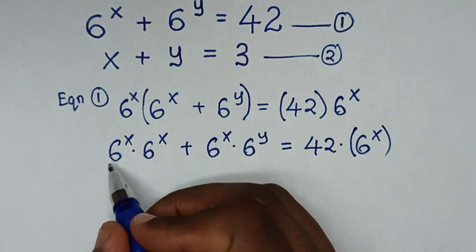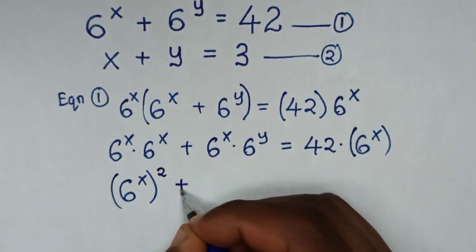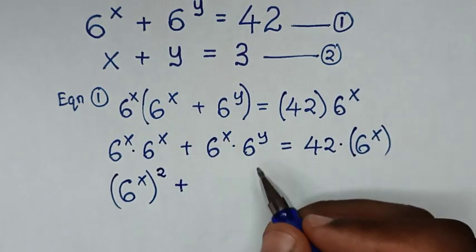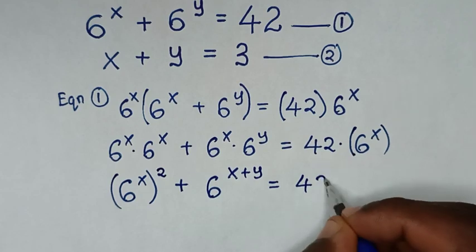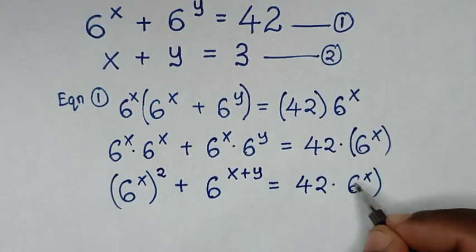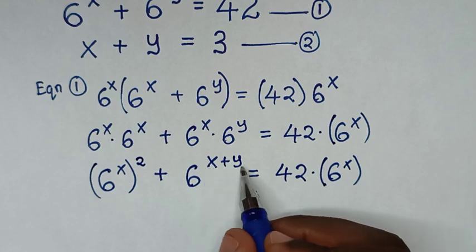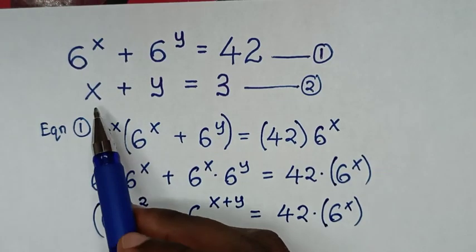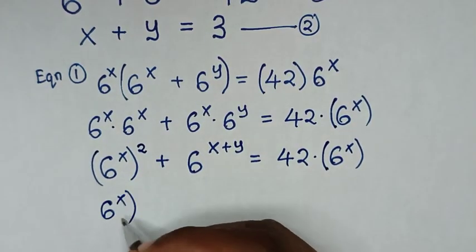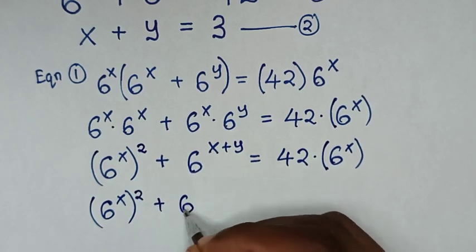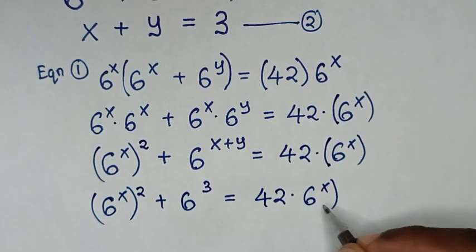In the next step, 6 power x times 6 power x gives 6 power 2x, and 6 power x times 6 power y gives 6 power x plus y. We then substitute the second equation x plus y is equal to 3, so it will be 6 power x squared plus 6 power 3 is equal to 42 times 6 power x.